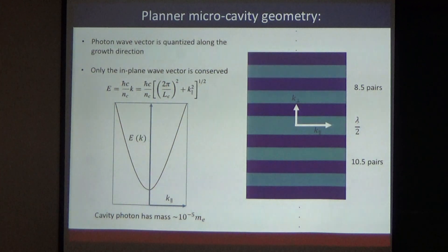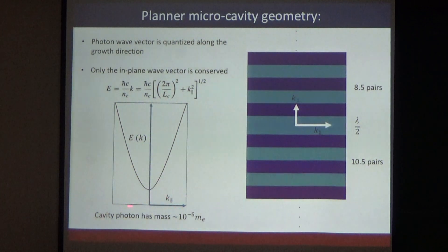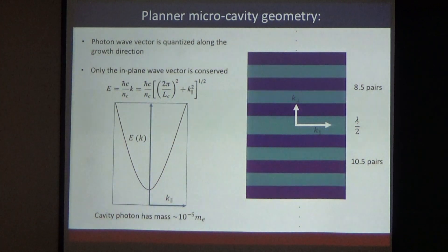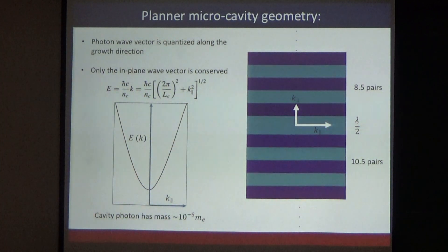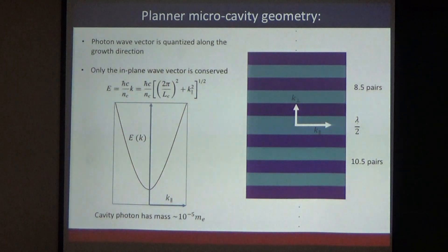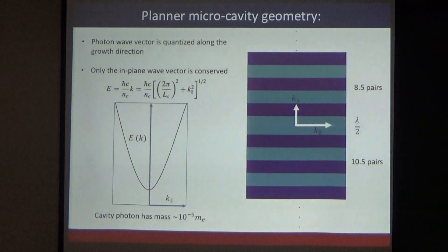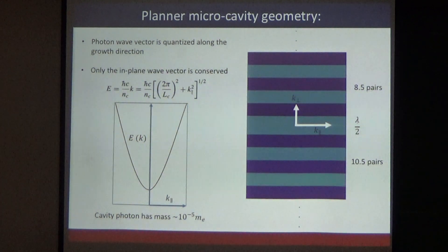The exciton also has a dispersion similar to the photon, but in the relevant range it appears almost flat. This is because the mass of the cavity photon — which you can calculate from the inverse of the curvature — is very, very small, meaning the curvature is very large. In contrast, the curvature of the exciton dispersion is much smaller, appearing almost flat on that scale. That is why the exciton is always plotted as a flat line.